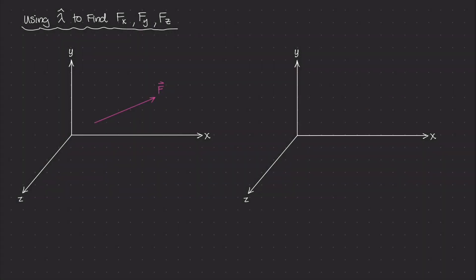When we study forces in space, in a three-dimensional system, we can usually define the force vector by two different points, A and B. Those labels are, of course, arbitrary — they can be any two points. For the sake of this video, we're going to say that point A has coordinates x1, y1, and z1, and point B has coordinates x2, y2, and z2.